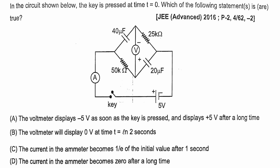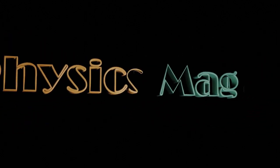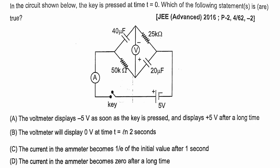Let us check and solve the problem. In this problem, we are given that in the circuit shown below the key is pressed at t equals 0. We have to check every single option and see whether it is correct or not. The first option: the voltmeter displays minus 5 volt as soon as the key is pressed and displays positive 5 volt after a long time. Then the voltmeter will display 0 volt at time t equals ln 2 seconds. The current in the ammeter becomes 1/e of the initial value after 1 second, then the current in the ammeter becomes 0 after a long time.